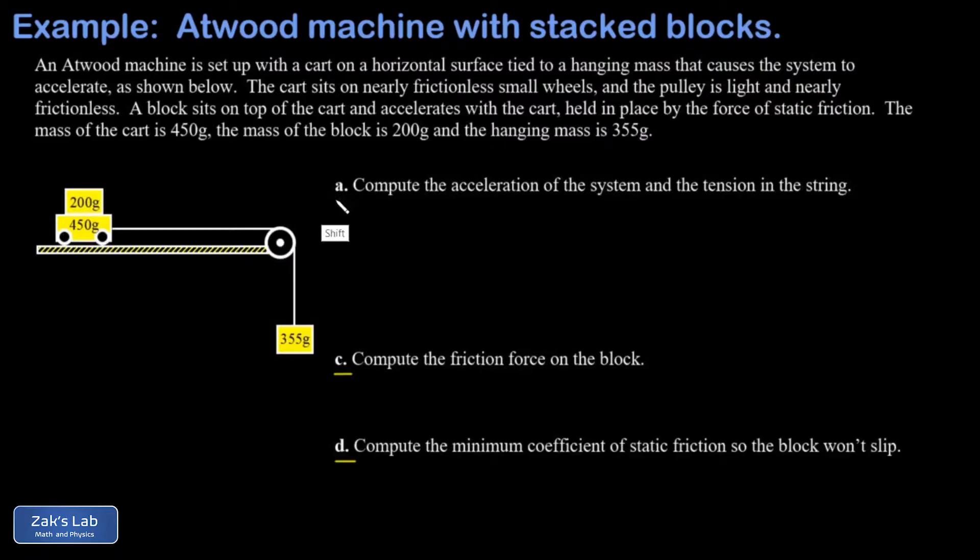But part A is a pretty standard Atwood machine question. I want the acceleration of the system and the tension in the string. And the key to this is to realize that provided the block doesn't slip, those two masses on the track move as one mass that has a mass of 650 grams or 0.650 kilograms.